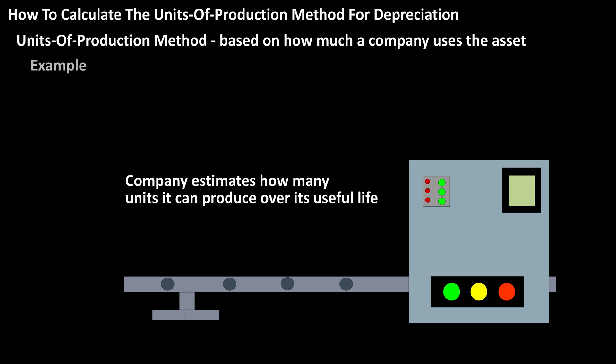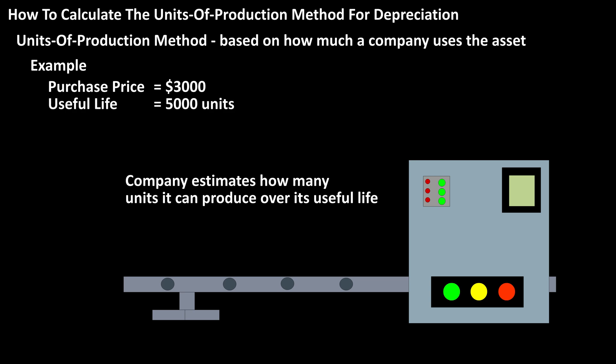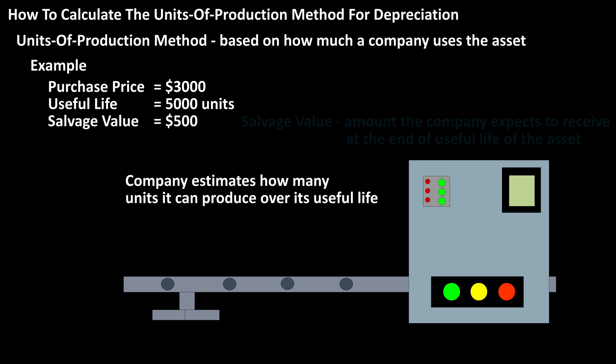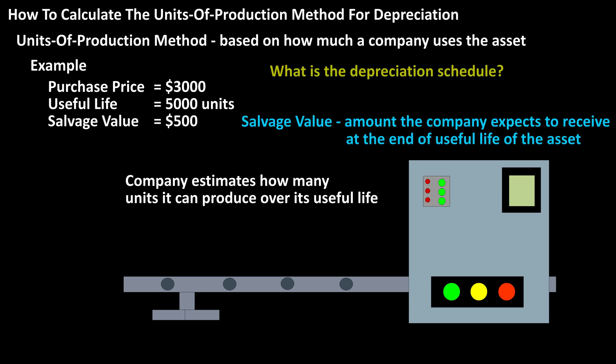As an example, let's say that a company purchases a piece of equipment for $3,000. The company estimates that the asset has a useful life of 5,000 units and the salvage value is $500. Create a depreciation schedule for the asset.